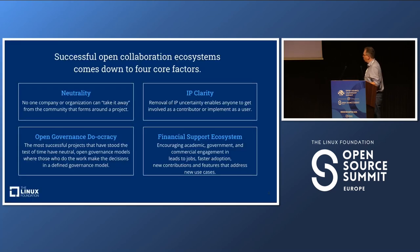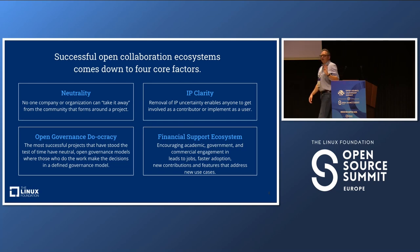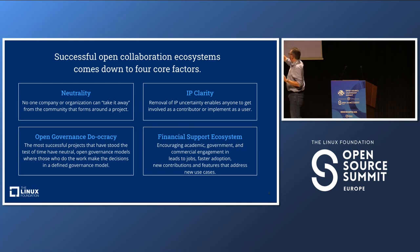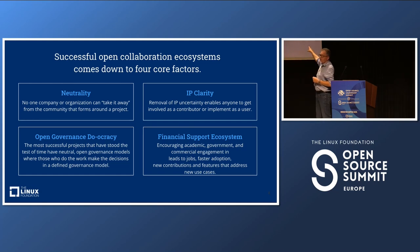There are four core elements generally to sustainable open source communities: neutrality, IP clarity, open governance, duocracy, and financial support ecosystems.